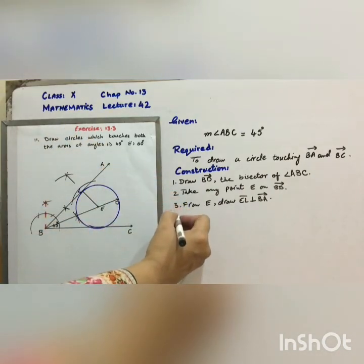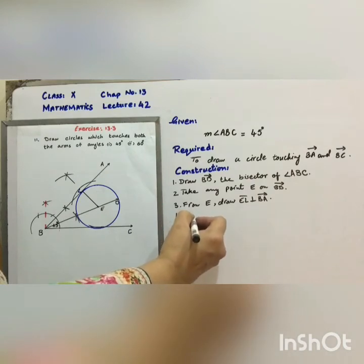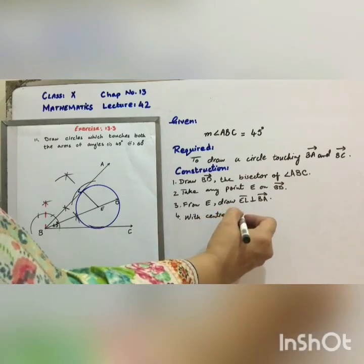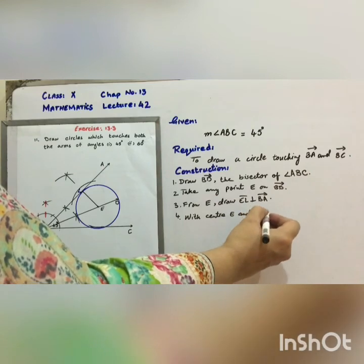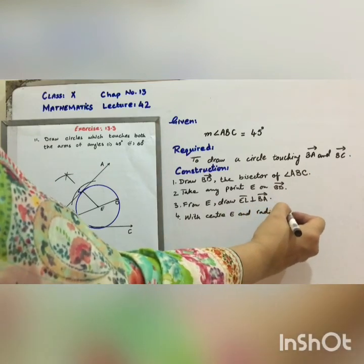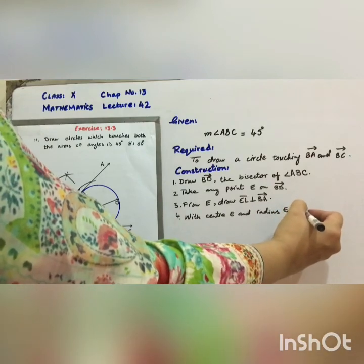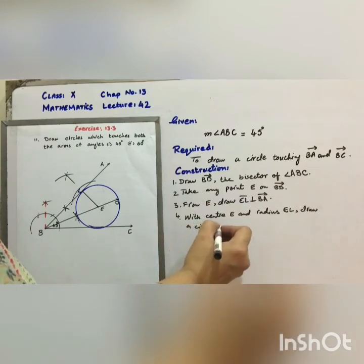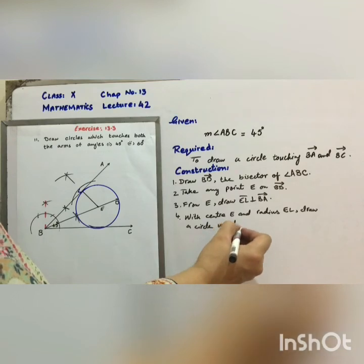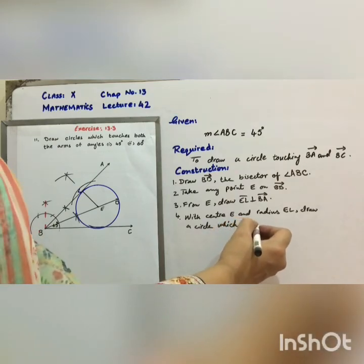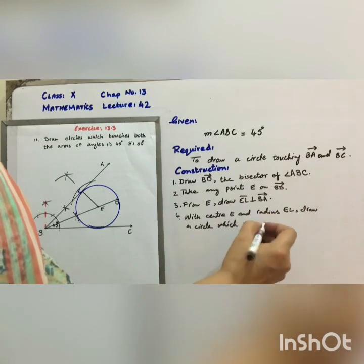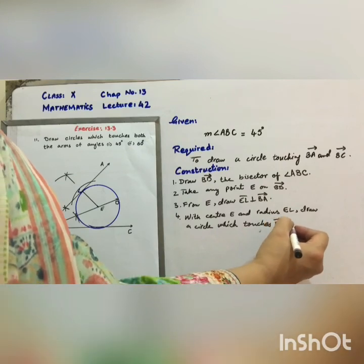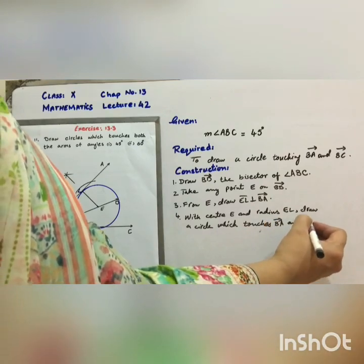Step number 4. Draw a circle which touches ray BA and ray BC.